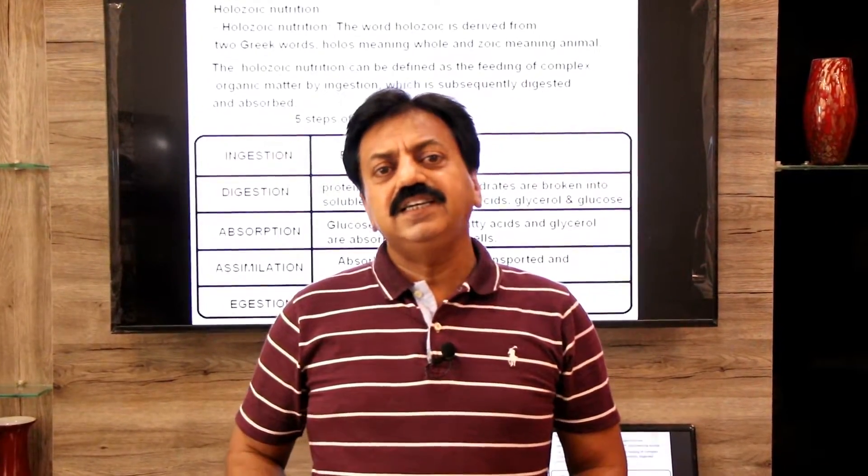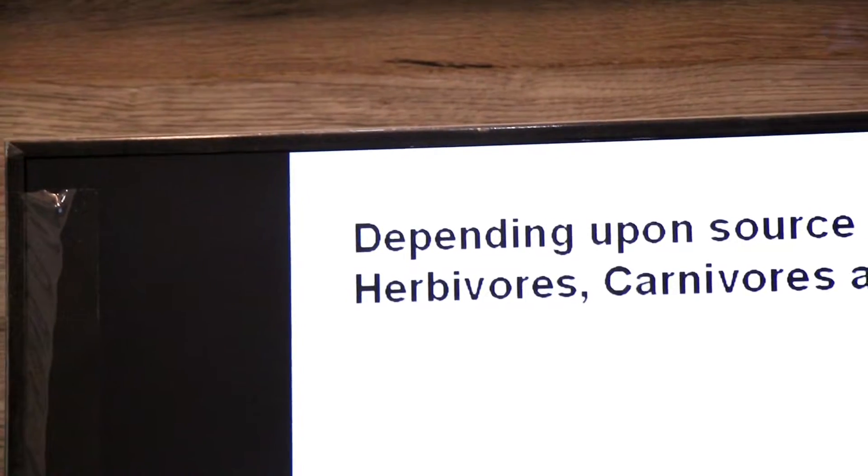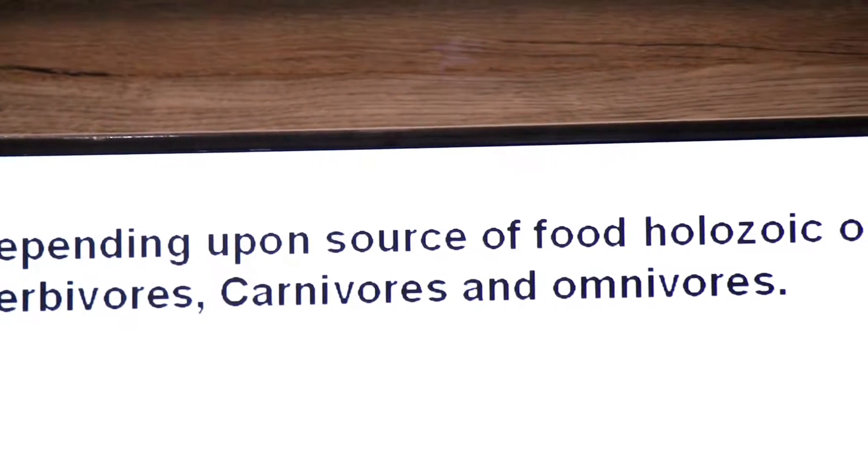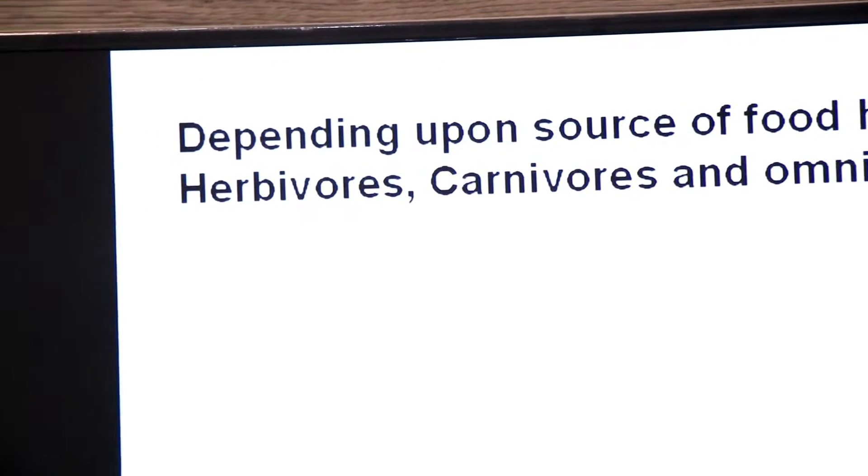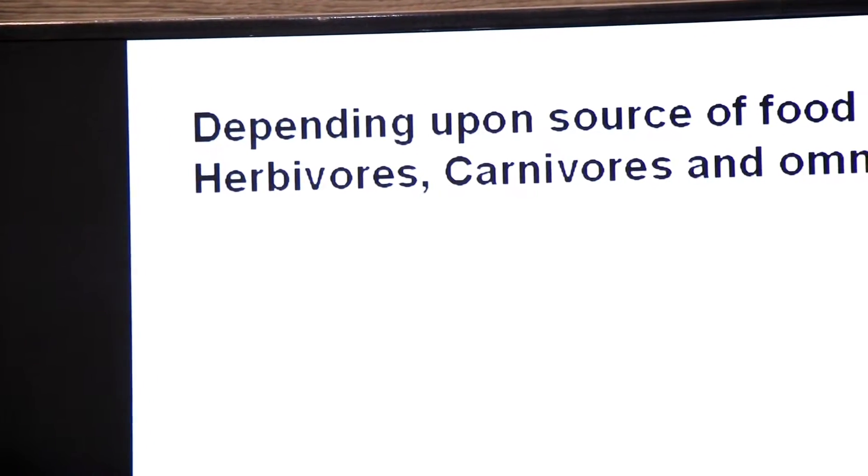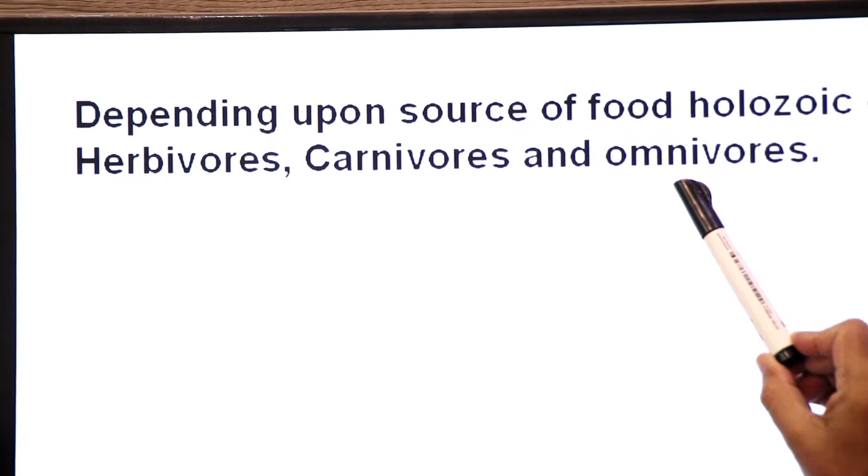Depending upon source of food, holozoic organisms are of 3 types: herbivores, carnivores and omnivores.